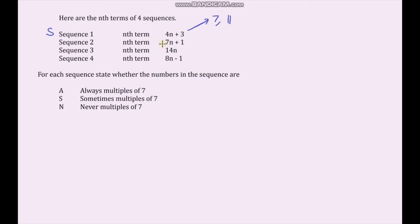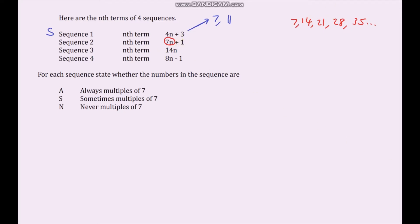For sequence 2, the nth term is 7n plus 1. Instead of trial and error, let's think about this: if the sequence were just 7n, then 7 times something is always a multiple of 7. The sequence 7n gives 7, 14, 21, 28, 35, and these are always multiples of 7. But because we're adding 1 each time, it's always shifted — so 7n plus 1 is never a multiple of 7.